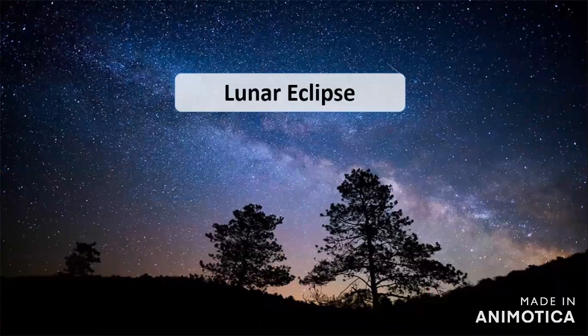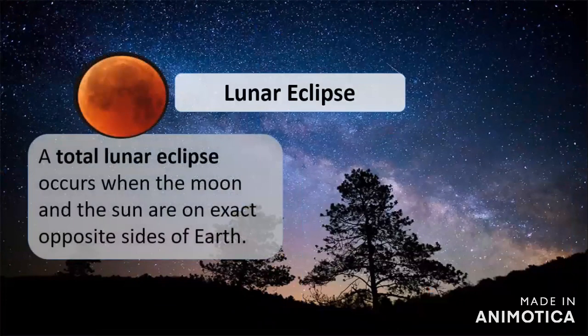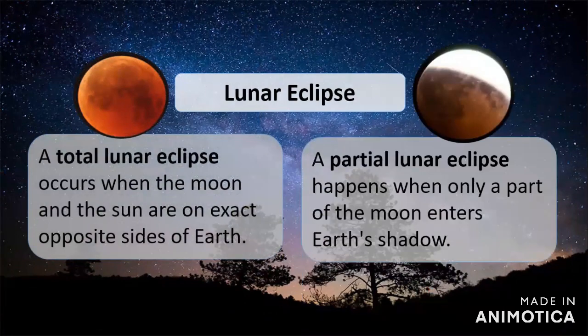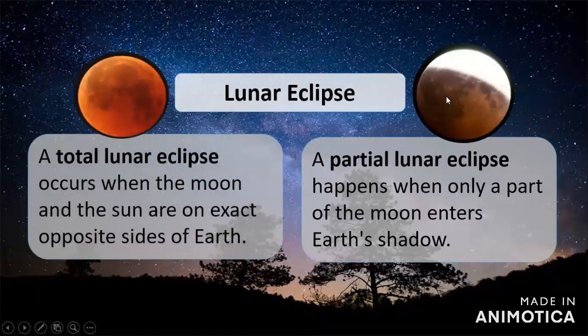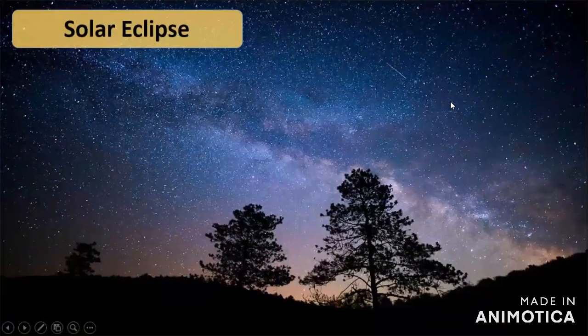There are two types of lunar eclipses. A total lunar eclipse occurs when the moon and the sun are on exact opposite sides of earth. A partial lunar eclipse happens when only part of the moon enters earth's shadow. These are the two visible forms of lunar eclipse you can observe from earth.